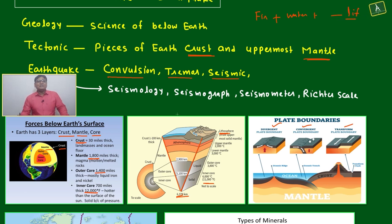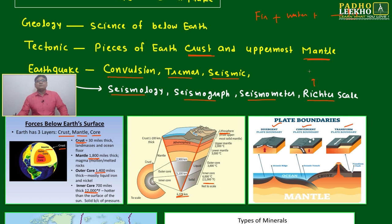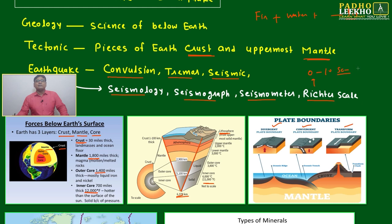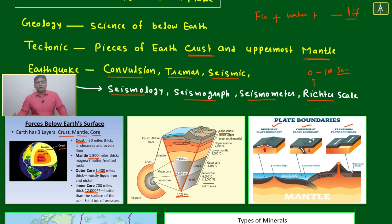Related to earthquakes, key vocabulary includes: convulsion, tremor, seismic, seismology, seismograph, seismometer, and the Richter scale — which is a measurement of earthquake intensity. The Richter scale goes from 0 to 10. If the reading is beyond 7, it is considered a high-intensity earthquake.